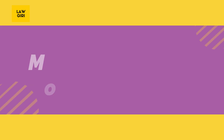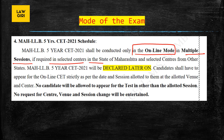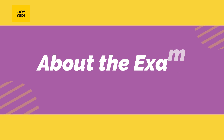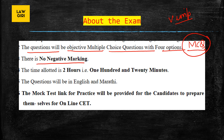The mode of the exam will be online, in multiple sessions if required, at selected centers in Maharashtra and other states. The questions will be objective multiple choice questions (MCQ) with four options. Very importantly, there is no negative marking — if you attempt a question wrong, no marks will be deducted.